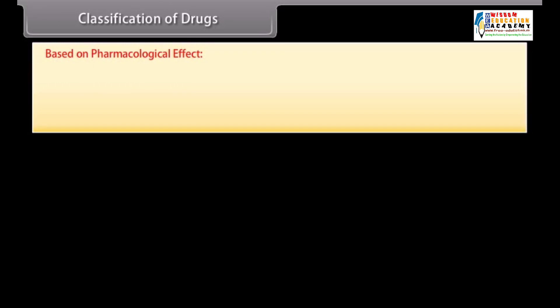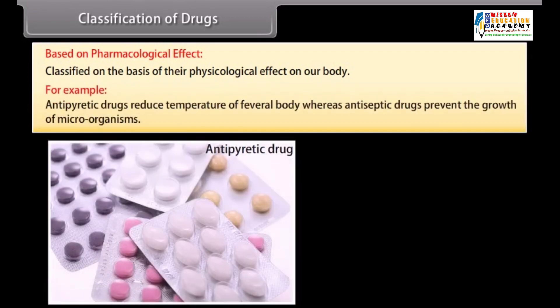Drugs can be classified in several ways. Based on pharmacological effect: drugs are classified on the basis of their physiological effect on our body. For example, antipyretic drugs reduce the temperature of a feverish body, whereas antiseptic drugs prevent the growth of microorganisms.